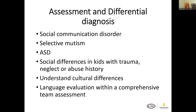As far as assessment and differential diagnosis, the things I keep in mind when I'm seeing a kid referred for a question of autism: social communication disorder — where we're seeing those differences with the absence of the restricted and repetitive behaviors — selective mutism. I see lots of kids referred for ASD evaluations where this can be what's going on. We're also looking at social differences we can see in kids with trauma, neglect, or abuse history, and understanding cultural differences with the family.